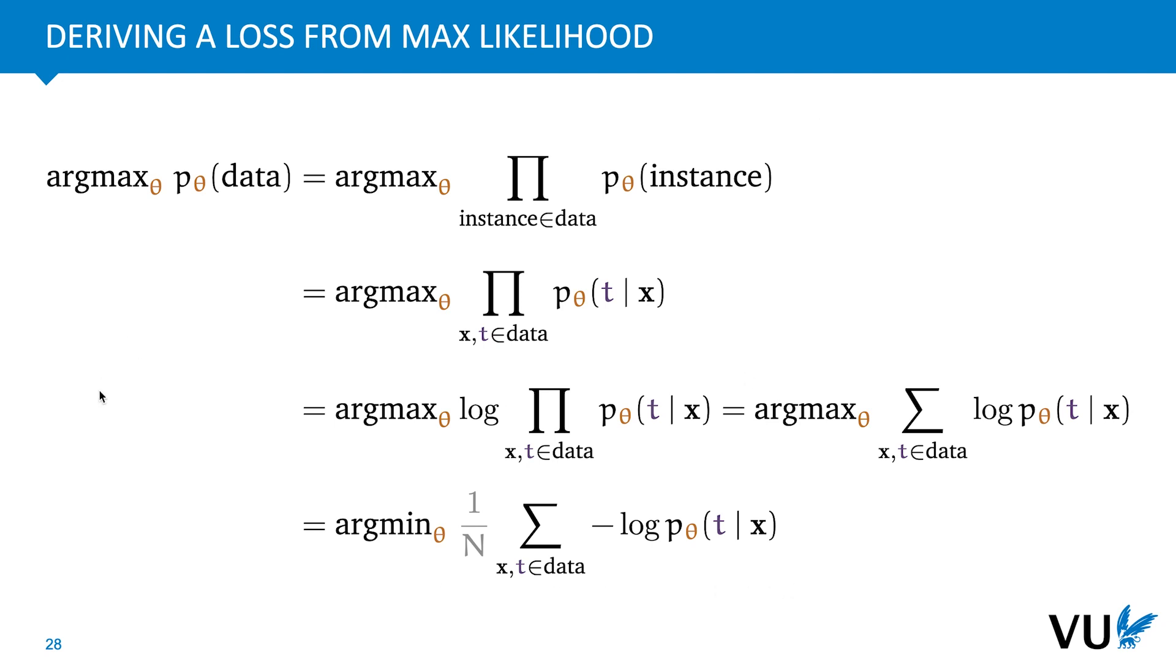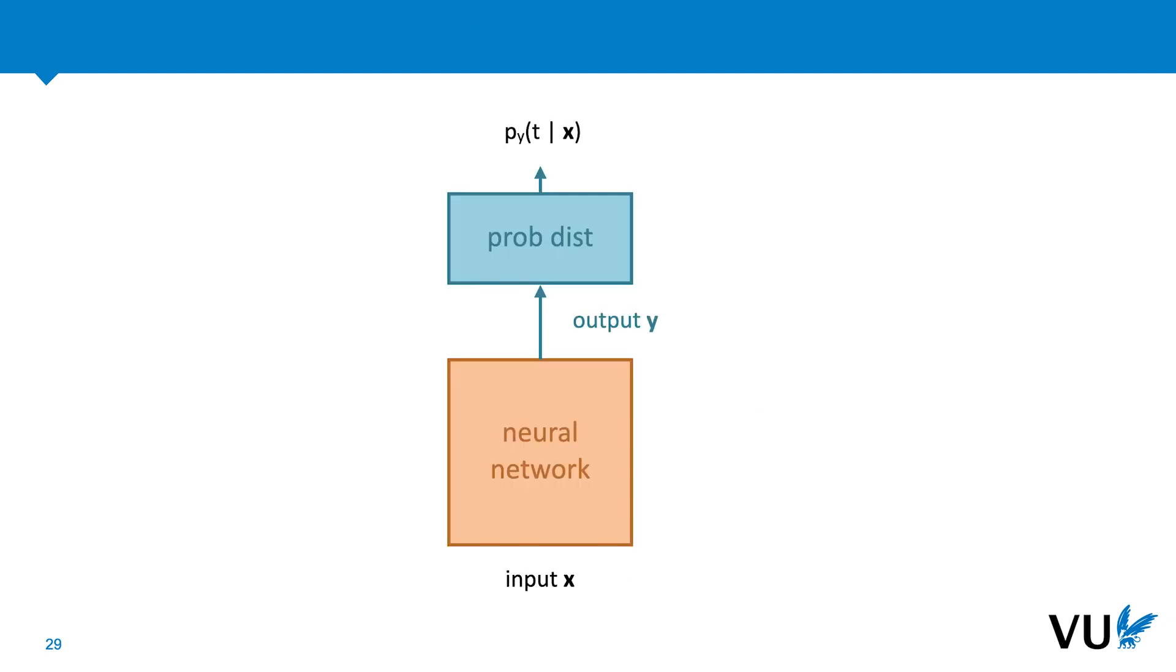That is, if we start with the maximum likelihood objective and we rewrite carefully step by step, we end up with a simple objective of minimizing the log loss. We can generalize this idea by viewing the output of the neural network as the parameters of a probability distribution.